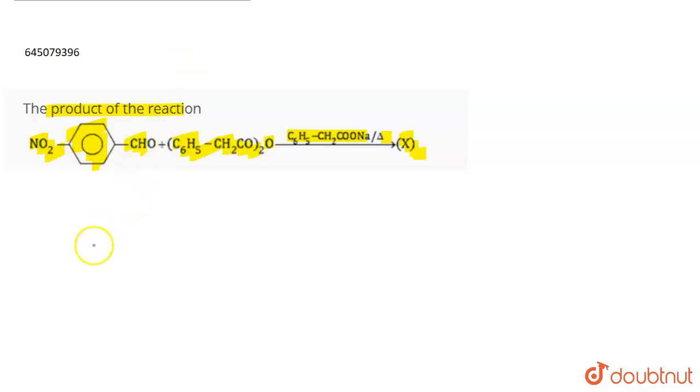Such reactions in which an acid anhydride - suppose the acid anhydride that we are taking is R-CO-O-CO-R, so this is the acid anhydride. Now when this is treated with an aldehyde group or an aromatic aldehyde...